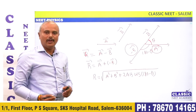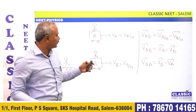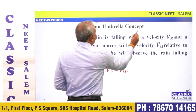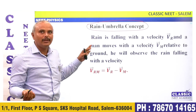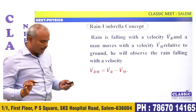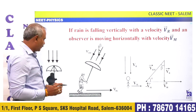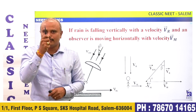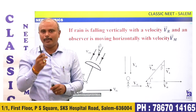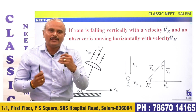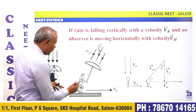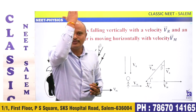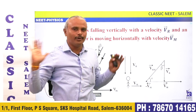First concept is relative motion; second concept is subtraction of vectors. Now let's look at an application: the rain-man problem. There's a man standing still while rain falls vertically. When the man starts running, he needs to tilt his umbrella at an angle. How do we find that angle? This is the concept.